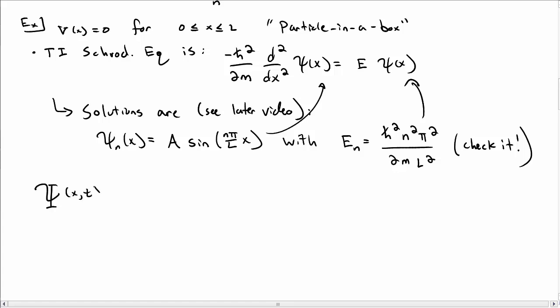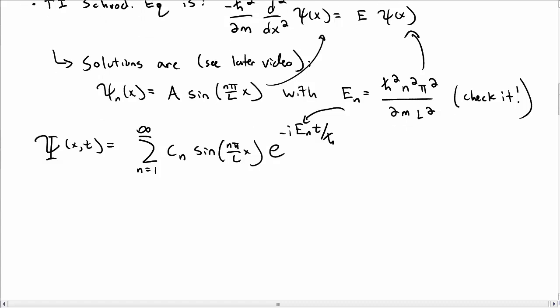So that tells us that the total wave function, capital Ψ, is now the sum from n equals 1 to infinity of c_n times sine of nπx over L times e to the minus i E_n t over ℏ, where E_n is this expression that we had here.